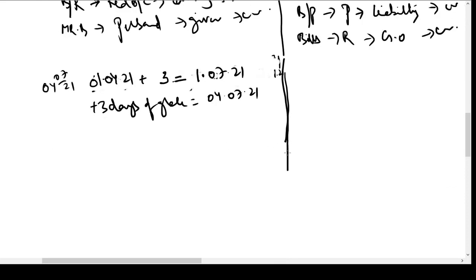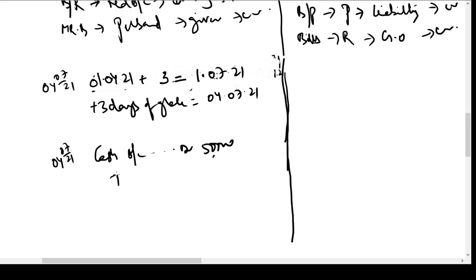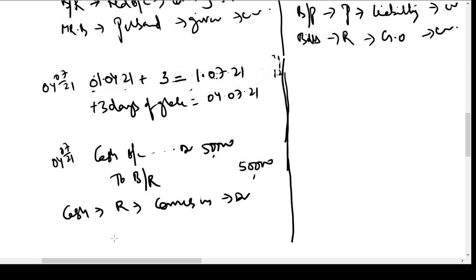On 4th July, Mr B approaches Mr A, returns the bill, and pays the money. Mr A passes the entry: Cash Account (or Bank Account) Debit 50,000, To Bills Receivable Account 50,000. He gives the bill back to Mr B. Logic: Cash is a real account — comes in, hence debit. Bills Receivable is a real account — goes out, hence credit.